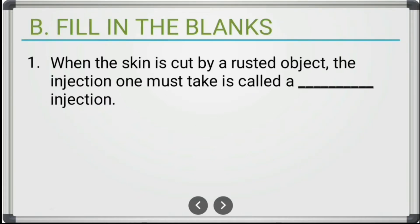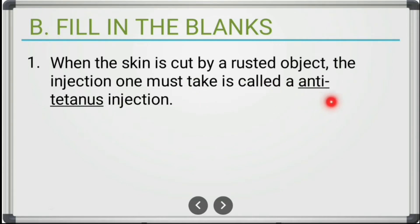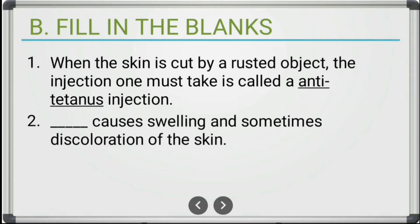Now, fill in the blanks. First: when the skin is cut by a rusted object, the injection one must take is called a dash injection. The correct answer is anti-tetanus injection.